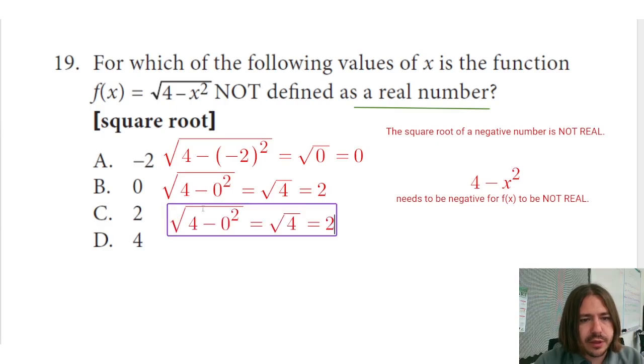If we try to plug in two, get 4 minus two squared. Well, again, two squared is four and four minus four is zero. So again, we get zero, another number that is real.